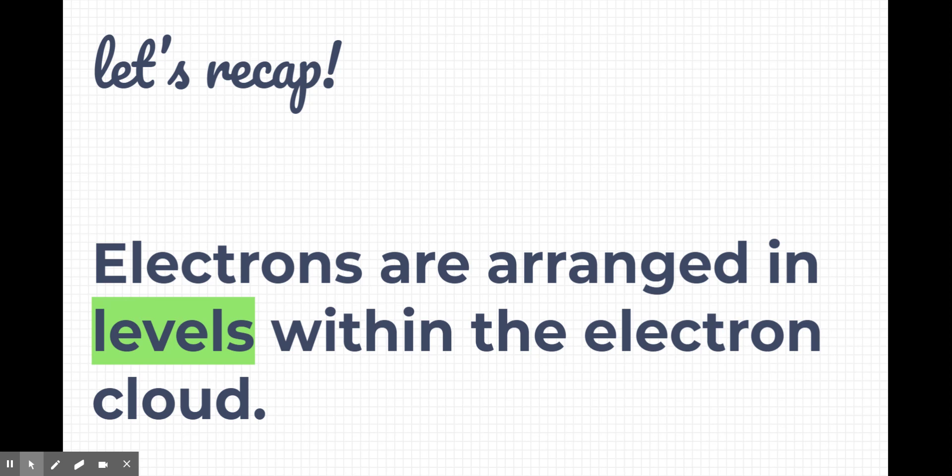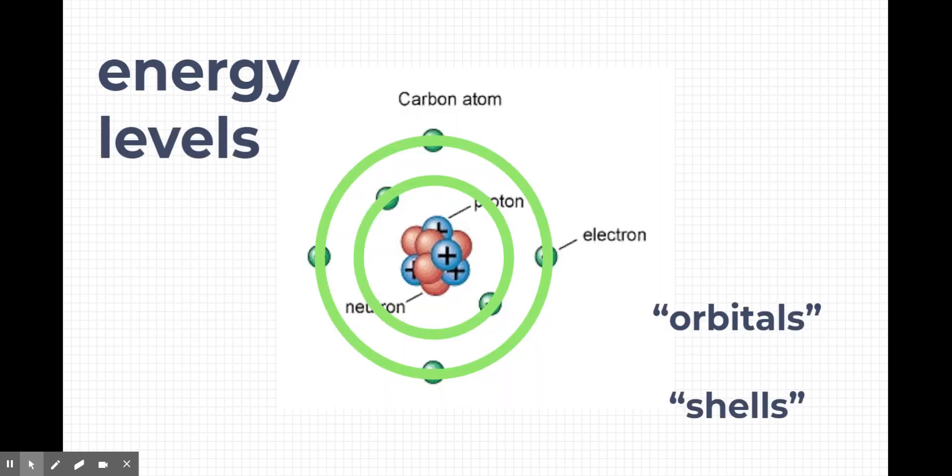Before we begin, we need to review energy levels because they're super important to understanding valence electrons. Remember, electrons are arranged in levels within the electron cloud. The electron cloud is the space outside of the nucleus where electrons orbit. However, the electrons are actually somewhat organized into these things called energy levels. You'll also see them called orbitals and shells, so make sure you know those terms.